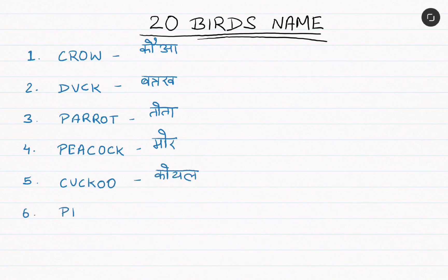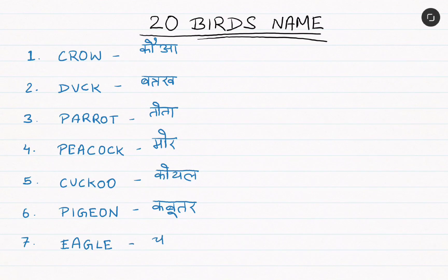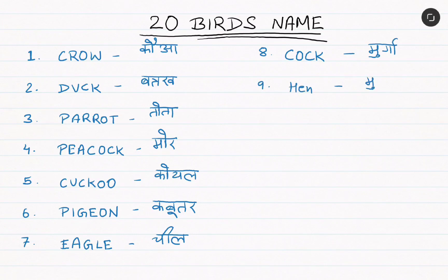Sixth, pigeon, that is kabuttar. Seventh, eagle, that is cheel. Eighth, cock, that is murga. Ninth, hen, meaning murgi.